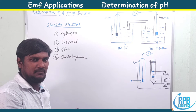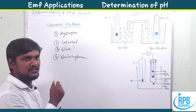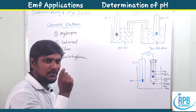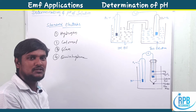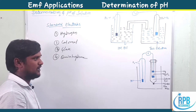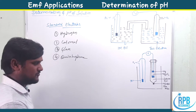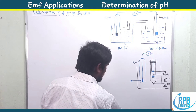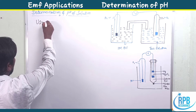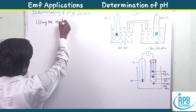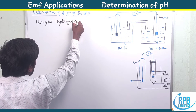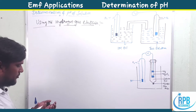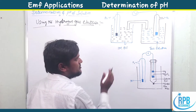We will go through each and every method — each standard electrode — and see how to find the unknown pH value of a solution. Now let's move to the first electrode: the hydrogen gas electrode. How do you find the EMF? This is the hydrogen gas electrode setup.